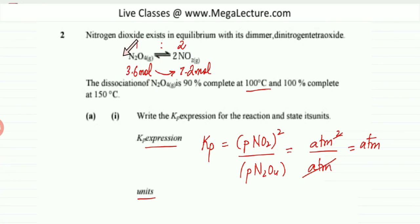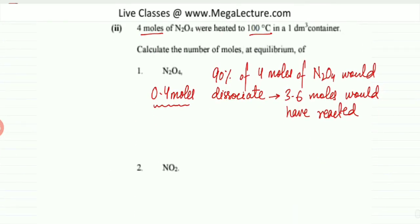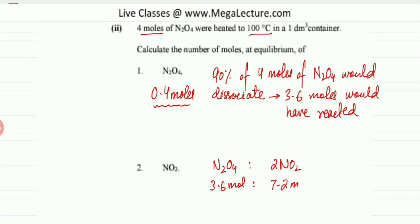To recap: we started with 4 moles and 90% reacted, so 3.6 moles reacted. Using the stoichiometric ratio — 1 produces 2 — 3.6 moles of N2O4 produce 7.2 moles of NO2. So 7.2 moles is the answer for this part.